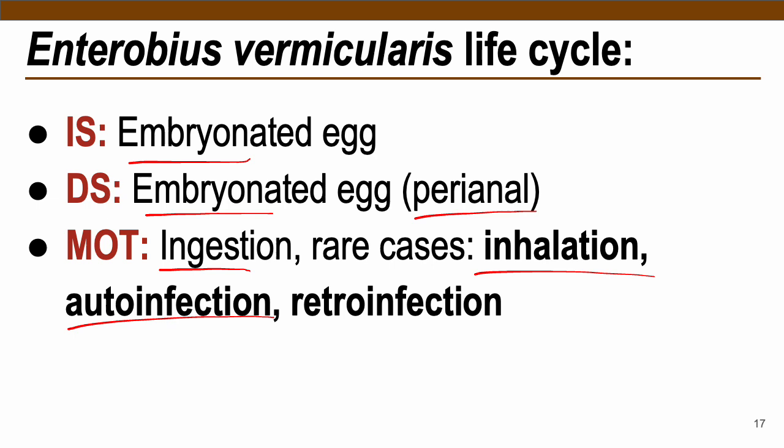Retro-infection occurs when embryonated eggs deposited in the perianal region hatch there and become larvae. These larvae then enter the anal region of the patient and travel to the large intestine, where the life cycle continues inside the host. Retro means going back.